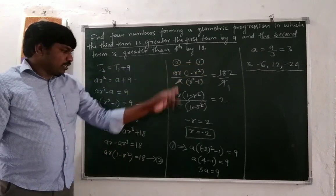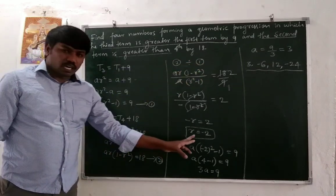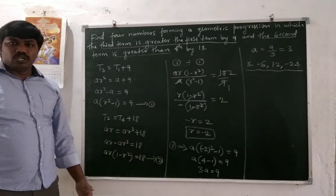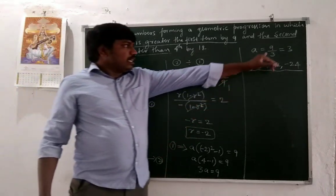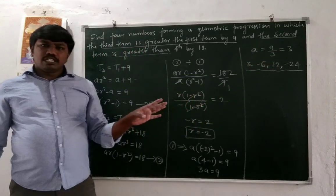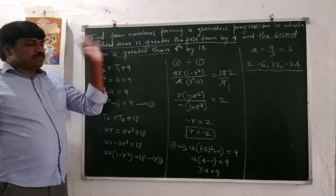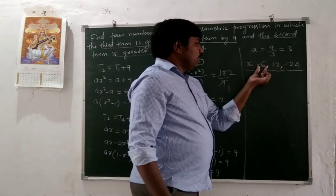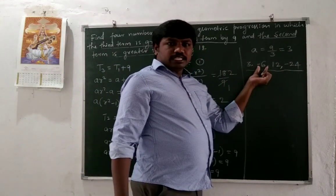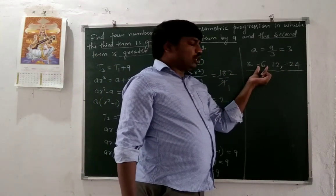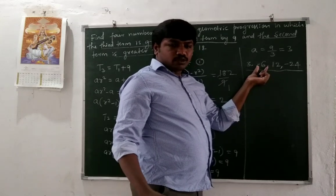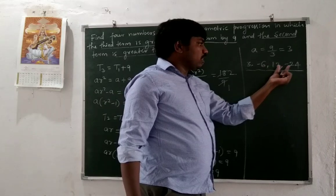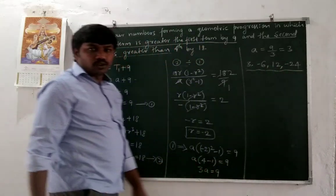The first four terms of the GP are: a = 3, a·r = -6 (since r = -2, so 3 × (-2) = -6), next is 12, and then -24.